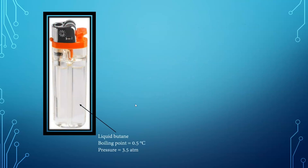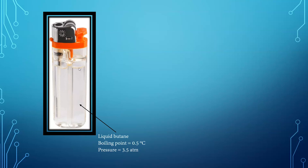For our source of butane, we're going to be using disposable butane lighters. The butane in the lighter is actually liquid, but it's only liquid because it's under pressure. Butane actually boils at 0.5 degrees Celsius — just above the freezing point of water. At room temperature, around 20 degrees Celsius, butane would normally be a gas, but in the lighter it's under pressure. Many gases, if you put them under pressure, will form a liquid. As soon as we push the valve and release the pressure, the liquid will begin to boil and butane gas will be formed.